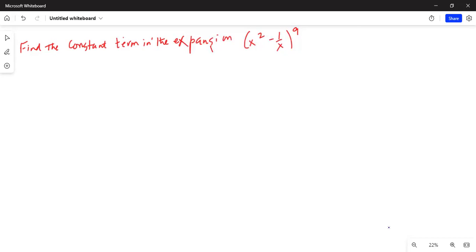Find the constant term in the expansion of (x² - 1/x)⁹. So let's do it. Solution: